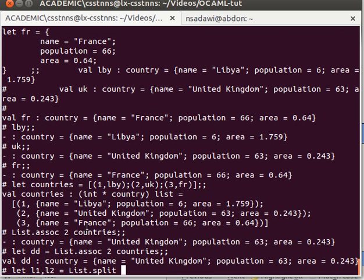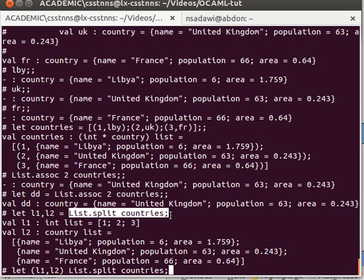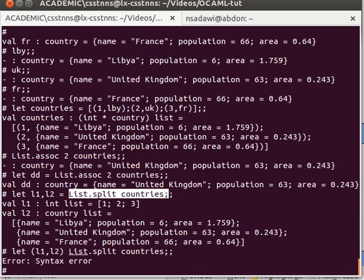Split, and then because our countries list is a list of pairs, we can actually split it. Now L1 will have the first element 1, 2, 3, and L2 will have the second part of the pair. Hope that makes sense. Now that's a tuple. I mean, I could have said let L1 and L2, and that's exactly the same actually, and then split the list.